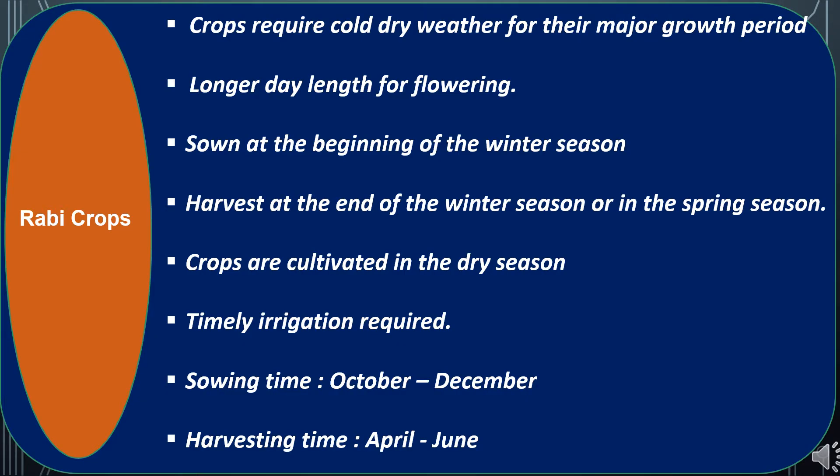The second major crops are Rabi crops, grown in Rabi season. Rabi crops require cold dry weather for their major growth period and a longer day length for flowering. Seeds are sown at the beginning of winter and the crop is harvested at the end of winter or the beginning of spring. Rabi crops are cultivated in the dry season, so timely irrigation is required. Sowing time generally ranges from October to December, while harvesting is scheduled from April to June.